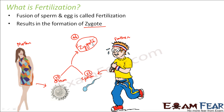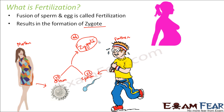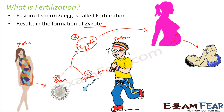This zygote will now undergo multiple divisions to form more and more cells. Gradually a group of cells will be formed; some cells will combine to form tissues, and they will start forming organs. That is how a fetus will be formed. The fetus will gradually develop into a small baby over a period of 9 months.